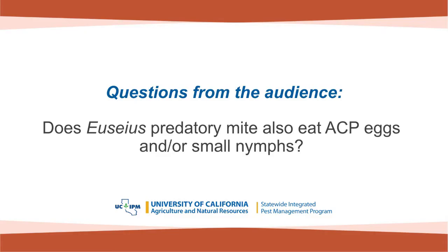Q&A: Does the Euseius predatory mite also eat Asian citrus psyllid eggs or small nymphs? The answer is I don't know for certain. It's a generalist predator, and my guess is that it would eat eggs since ACP eggs are small and in the right size range. As for nymphs and beyond, I just don't know.